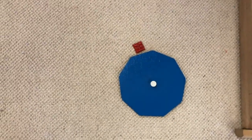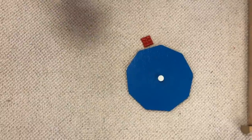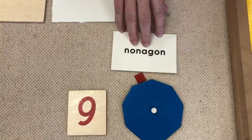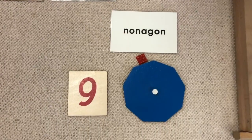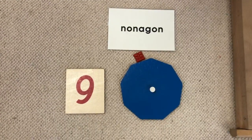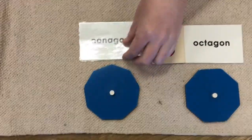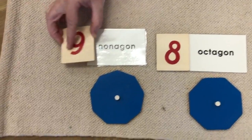The nine-sided polygon, let me get our nine, is called a nonagon. Nonagon, which is just fun to say. Nonagon. I'm going to put our nonagon down here with our nonagon label, the number nine.